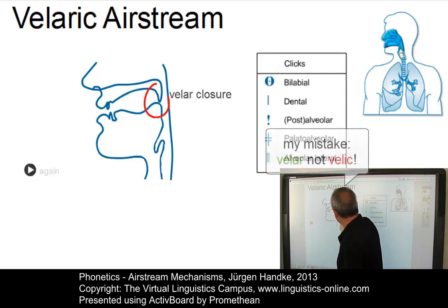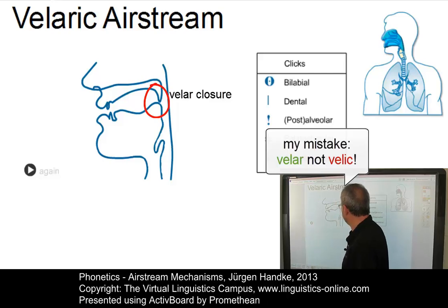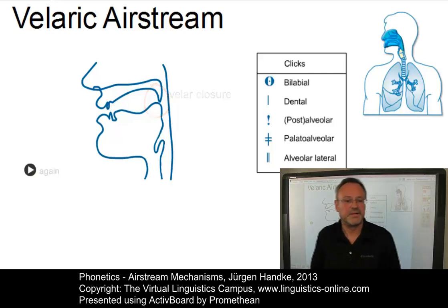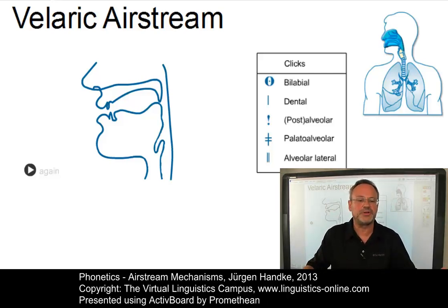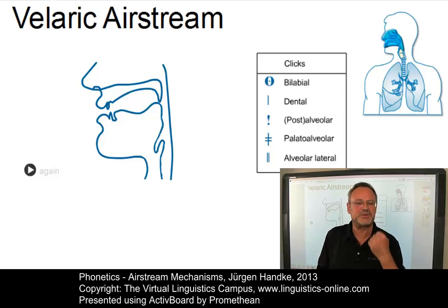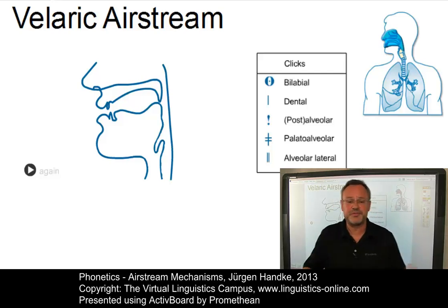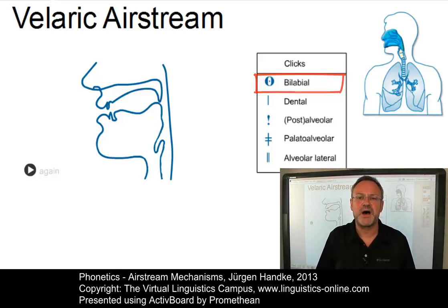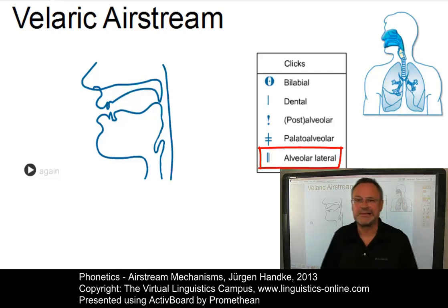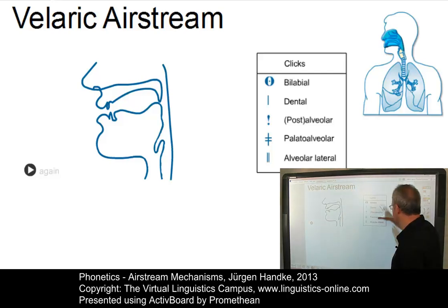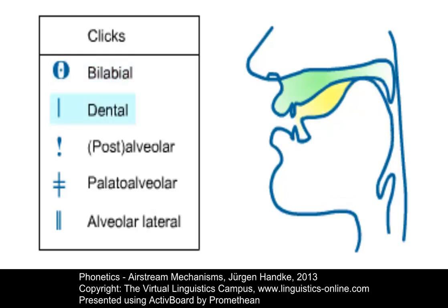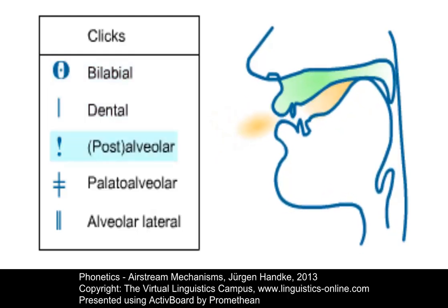You see here is the velar closure, and then somewhere in the vocal tract you have a second closure. Even though it is possible to use this mechanism to cause air to flow outward, languages only use the velaric ingressive variant, resulting in clicking sounds referred to as clicks. Here are some clicks — for example, the bilabial click, or the alveolar lateral click. Let's look at some animations to see how they are produced.